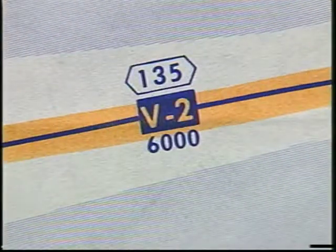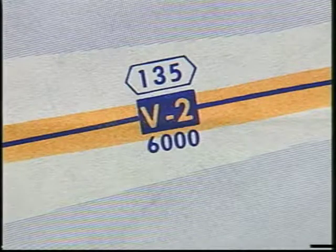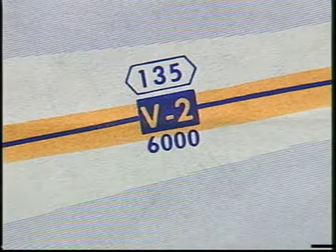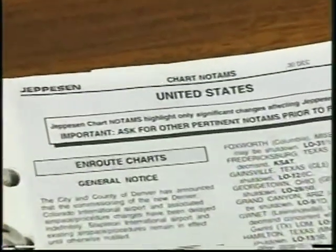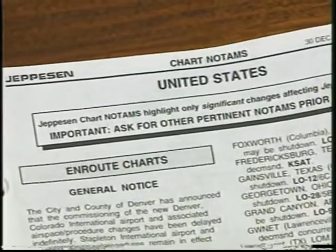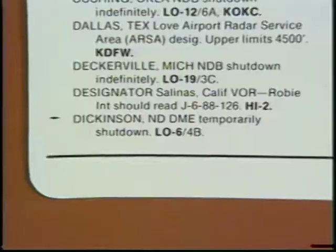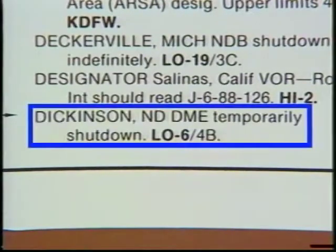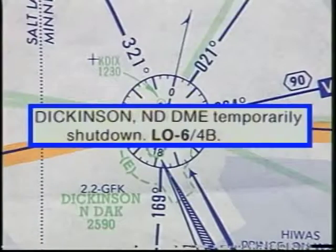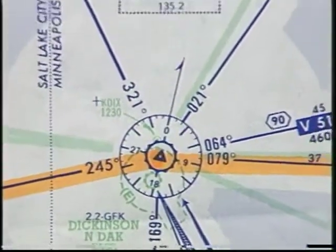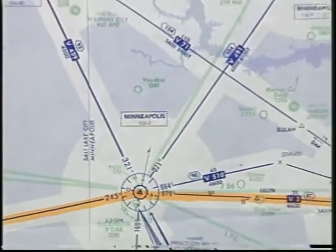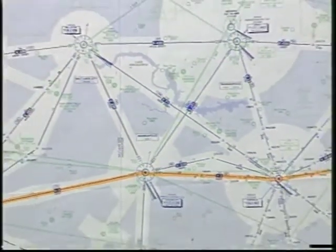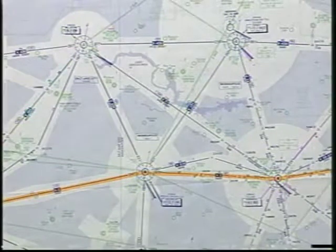You should also note the MEA for each segment. The highest is 6,000 feet between Miles City and Dickinson. Then consult the chart NOTAMs to see if any of the navigation aids along your route are affected. Although the Dickinson DME is temporarily shut down, this outage shouldn't affect your flight since DME is not required to navigate on Victor 2. However, you won't be able to receive distance measurements from Dickinson, so you'll have to keep track of your position by using other VORs in the area. You'll want to keep this in mind when selecting your cruising altitude.